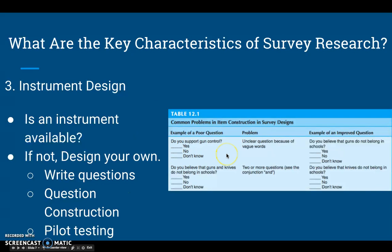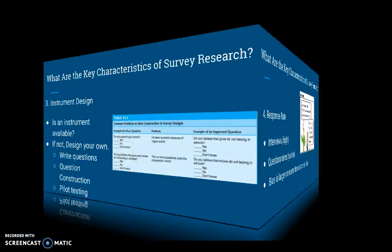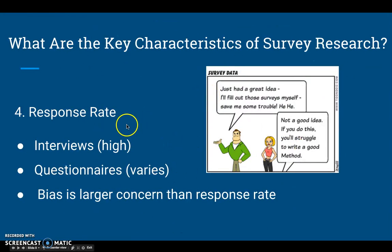When writing your own questions, you have to be careful and construct quality questions like a professional. After designing your instrument, it's important to pilot test it — sending it to a small sample of people to make sure it works, whether you created it yourself or used an existing one. The fourth characteristic is response rate: the amount of responses you receive. Through interviews, response rate tends to be high since you're directly administering them. With questionnaires, it can vary widely depending on how you send them out and encourage participation.